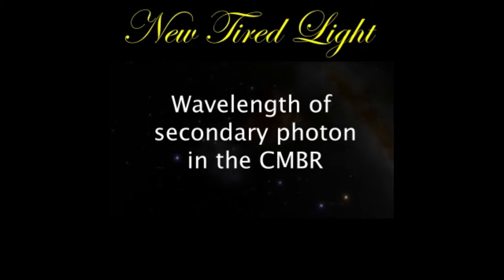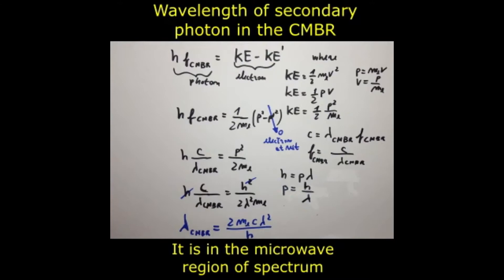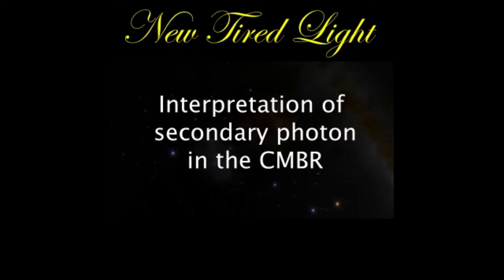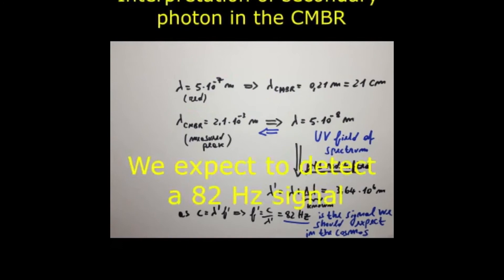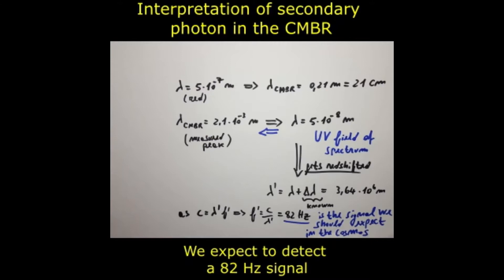The total increase in wavelength of the photon at each collision with an electron can be calculated accordingly. The secondary photon is in the microwave region and comes from photons in the ultraviolet field of the spectrum. If we consider, for instance, the photon corresponding to a wavelength equal to red, then it generates the cosmic background radiation with a wavelength equal to 21 cm. Through our telescopes, we detect a peak in the cosmic background radiation coming from a photon of light in the ultraviolet, which in turn gets redshifted as well — meaning we should be able to detect a signal of 82 Hz.